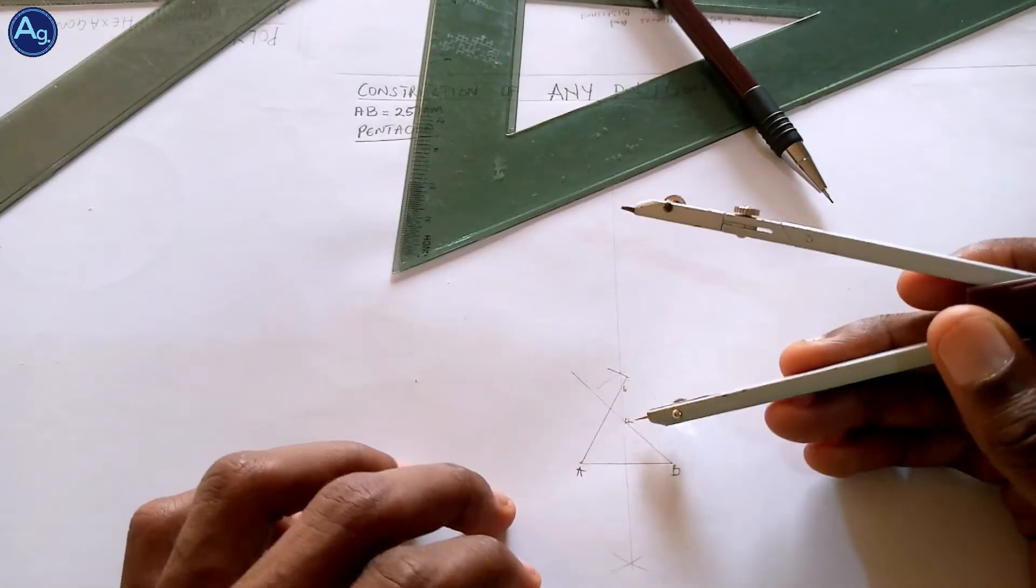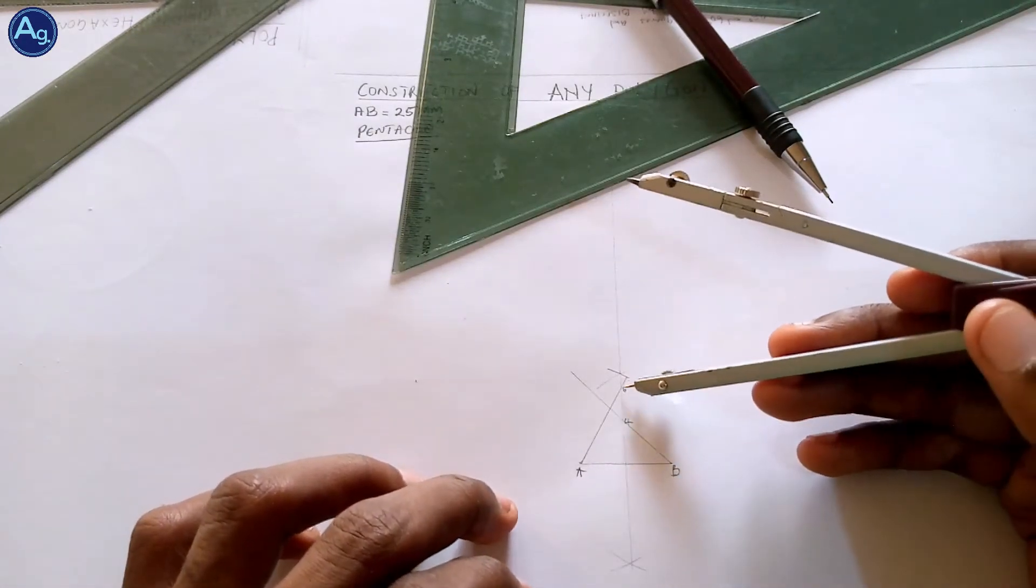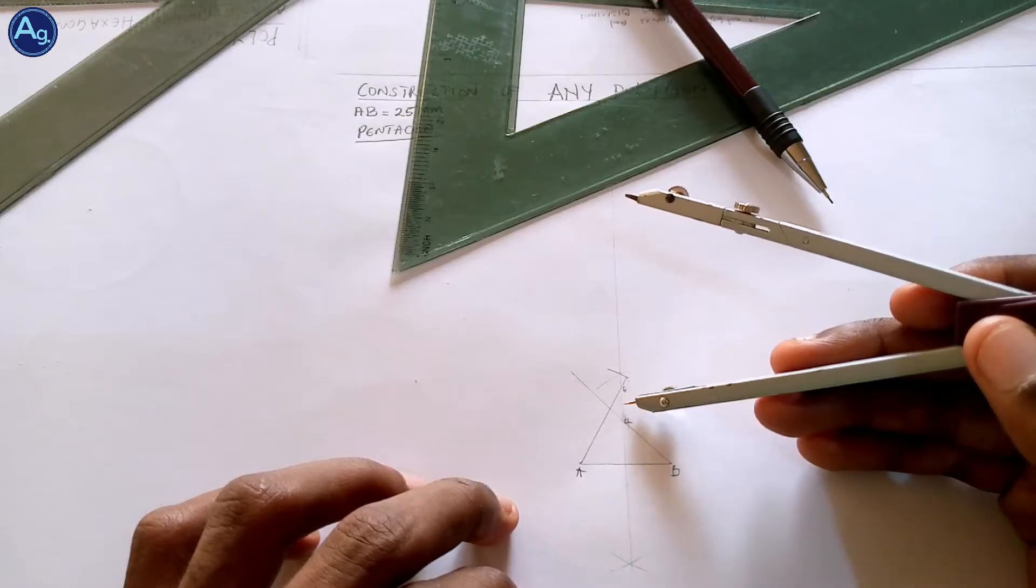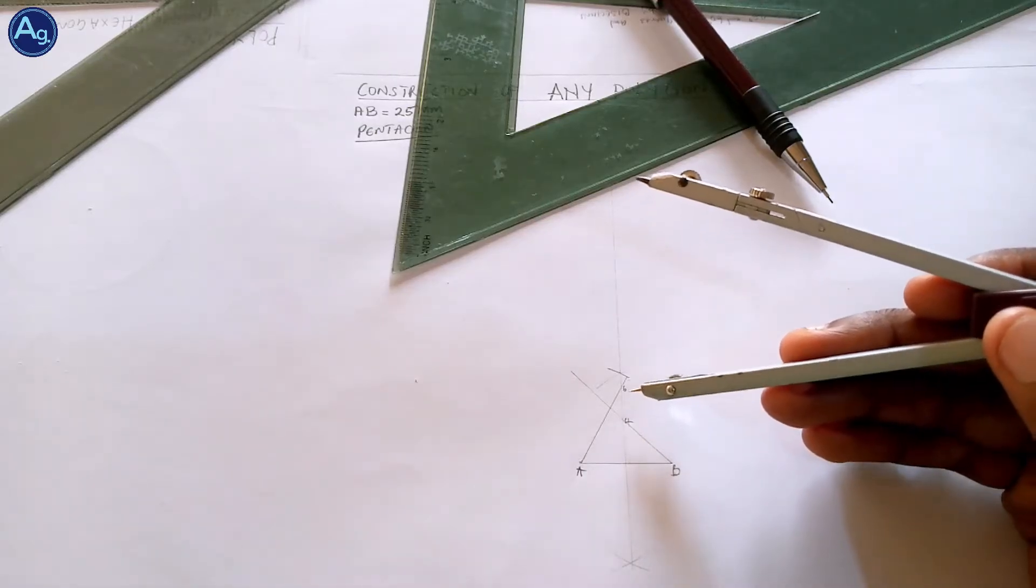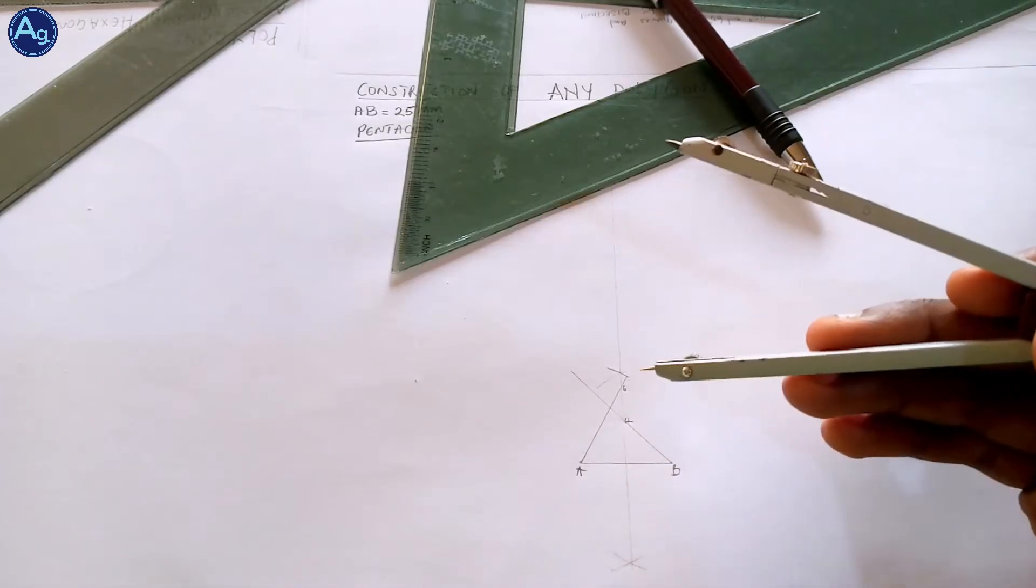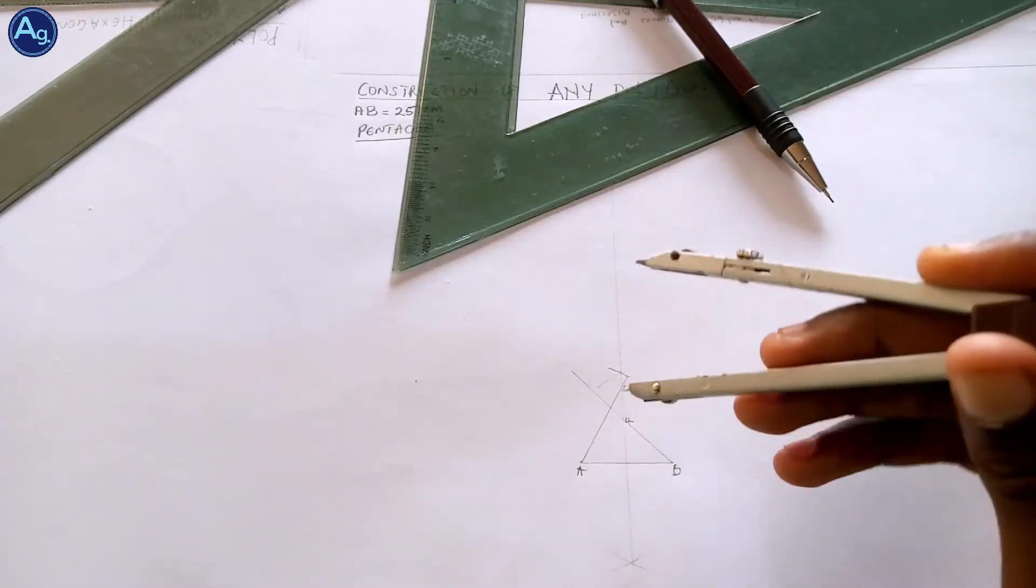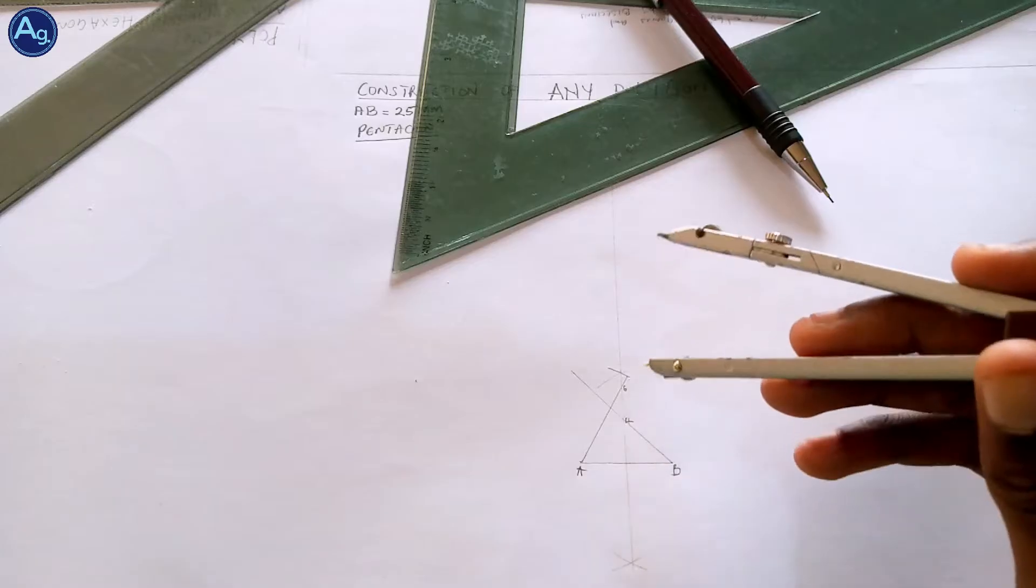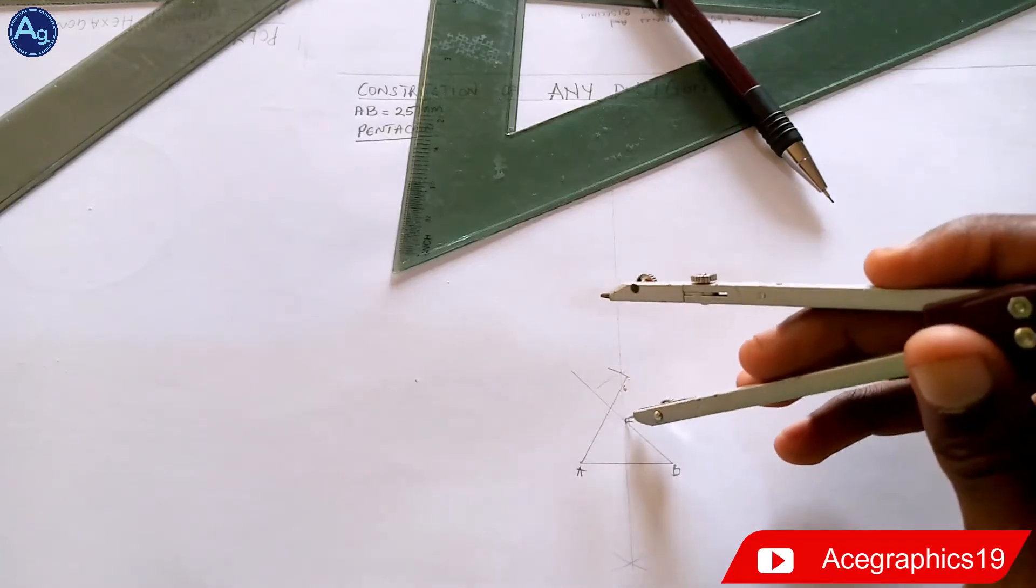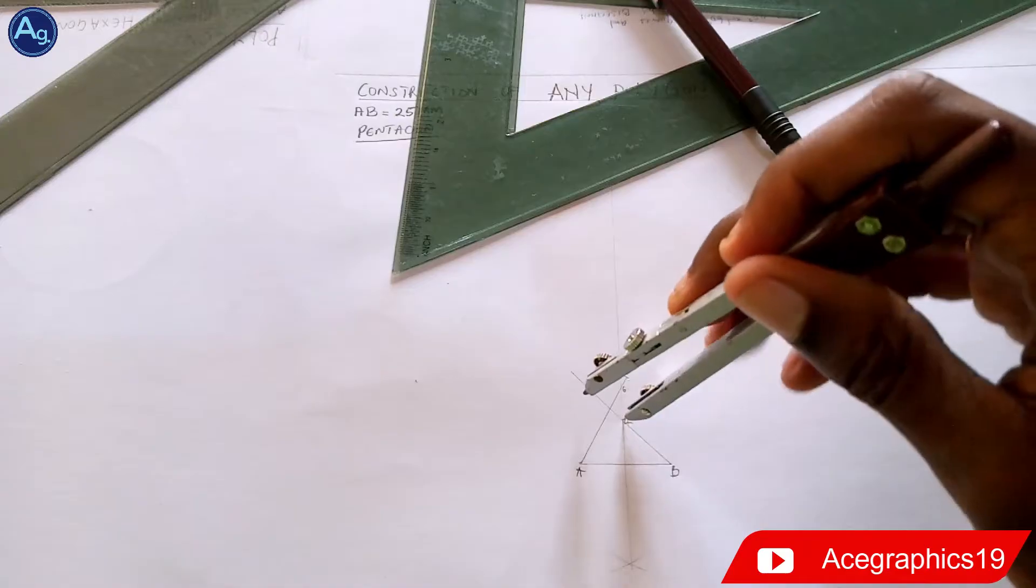Now we have on this line we have 4 and we have 6, so you want to get 5. We're constructing a pentagon, so we're going to divide this line into 2, because 4 plus 6 is 10, so half of 6 is 5.